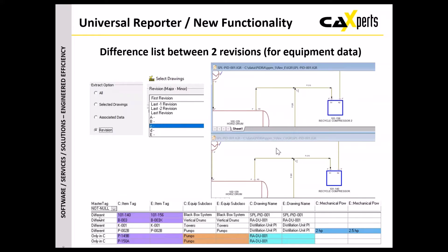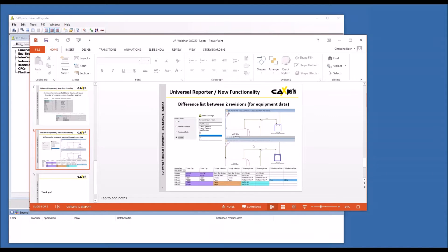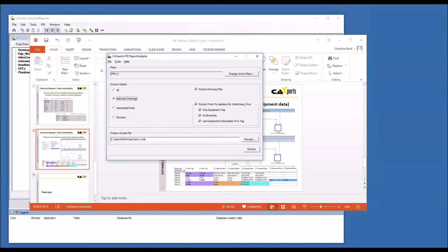This example shows equipment comparison between two revisions extracted from the PID. You will find different objects — ones that exist in both databases but where the item tag was renamed, or where some technical data has been modified — but you can also see what is only on one side or only on the other side. A new function is the possibility to start the highlight directly from the multi-window or comparison window: right-click highlight and both PIDs will open showing the data you are looking for.